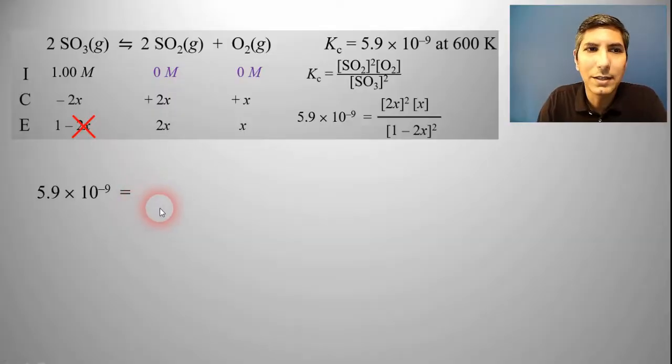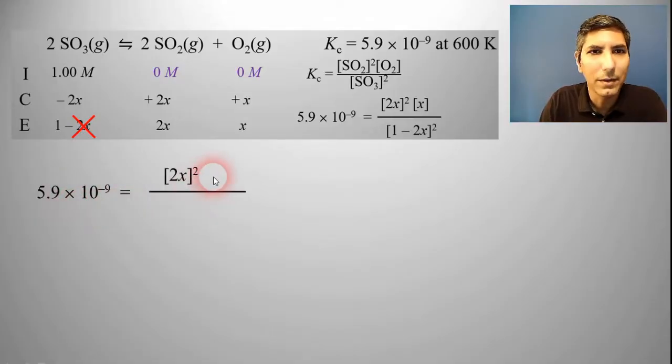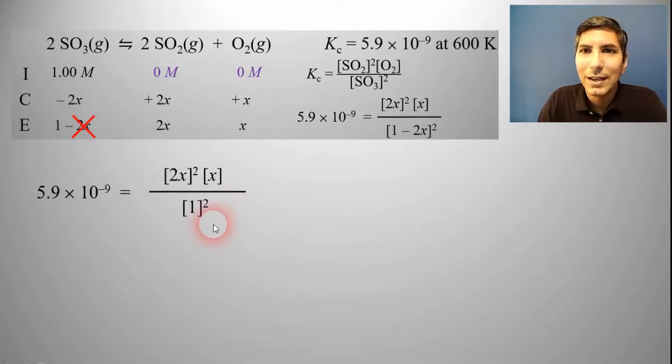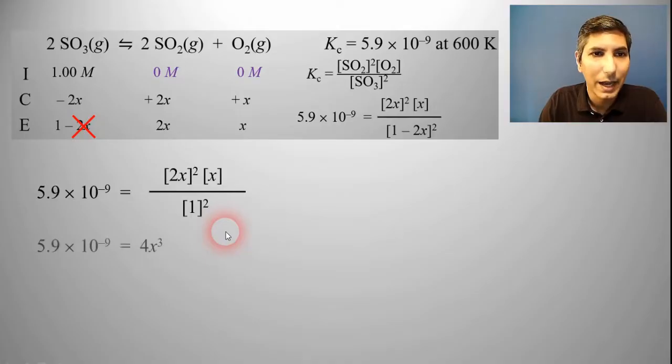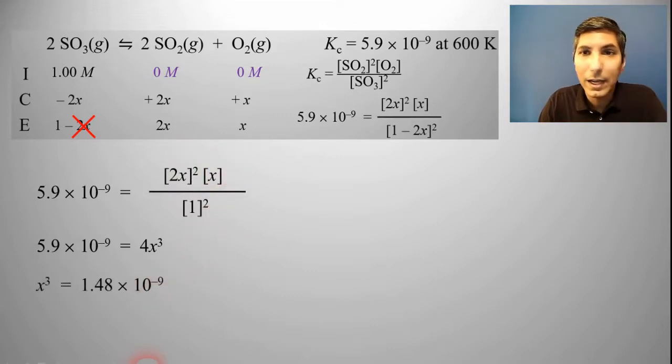Let's work the problem by ignoring this minus 2X. When I plug this into the equilibrium constant expression this time, I get the equilibrium constant equals 2X quantity squared times X all over 1 squared. All of a sudden, this makes the problem a whole lot easier. I can cross multiply, and of course I have 4X cubed. I can divide both sides by 4, and then I can take the cube root of 1.48 times 10 to the negative 9th, and I find that X equals about 1.1 times 10 to the negative 3rd.